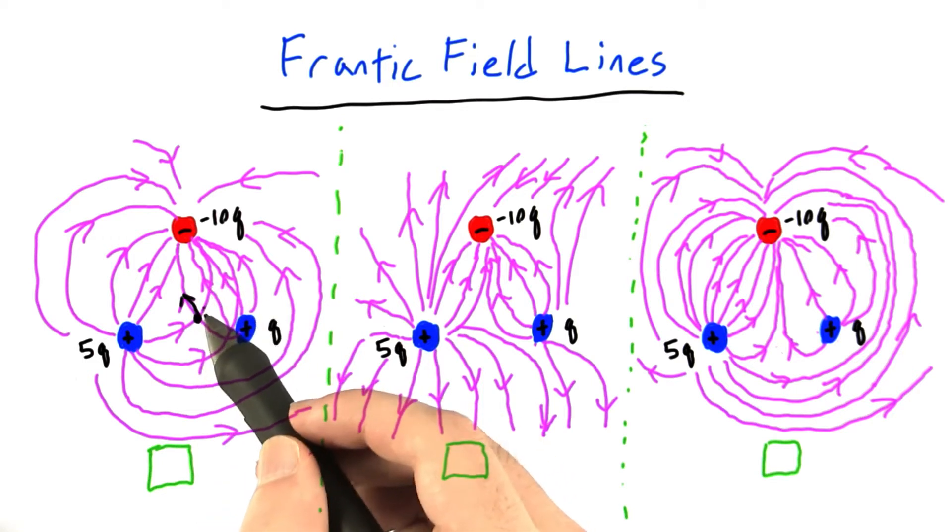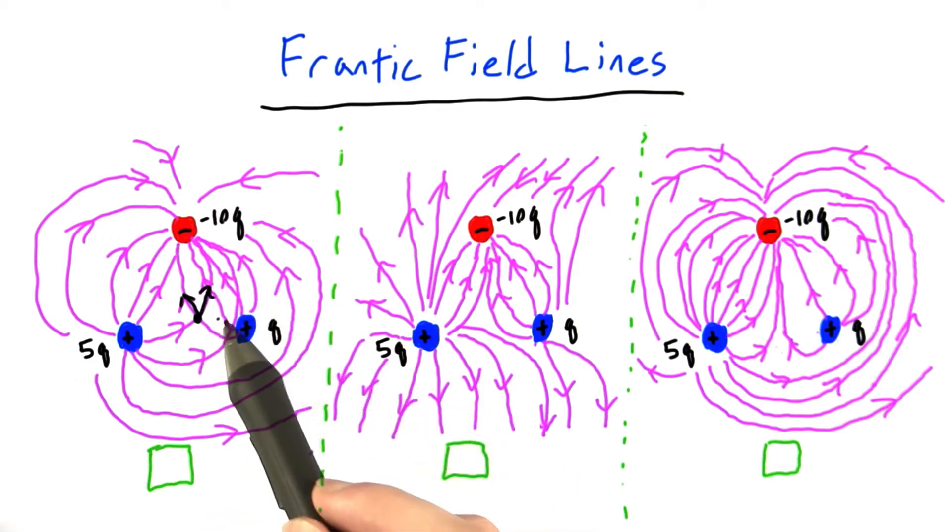And according to this field line, it should be pushed this way. Now we know that at a given location, an electric field can only push on a particle in one direction. So this case where it's pushing on it in two different directions is just nonsense. So we know that this diagram has to be wrong.